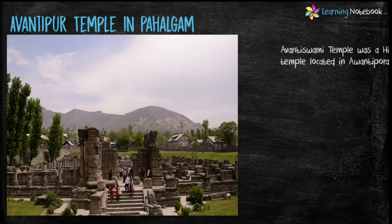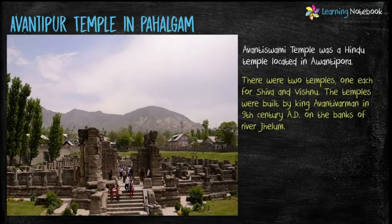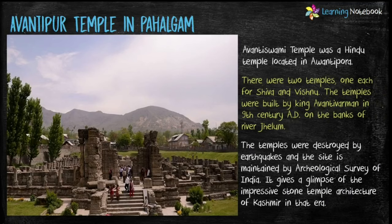The last famous religious place is Avantipora Temple, a Hindu temple located in Avantipora, Pahalgam. There were two temples — one for Shiva and one for Vishnu — and these temples were destroyed by earthquakes.